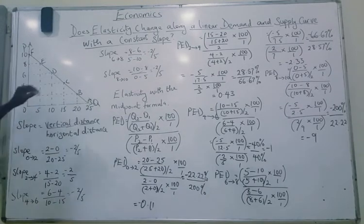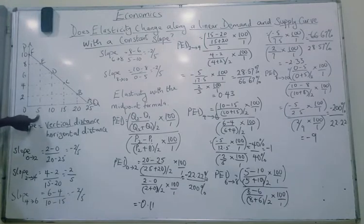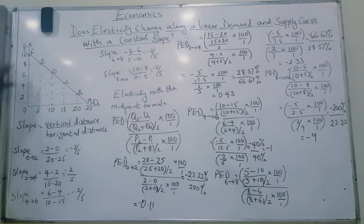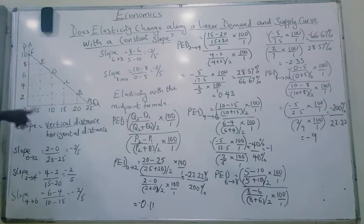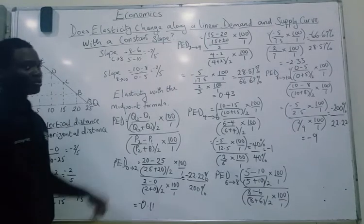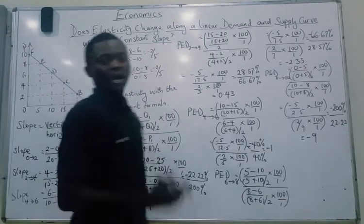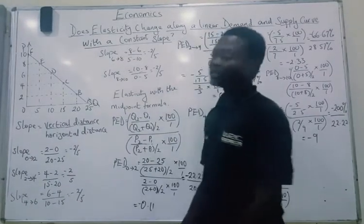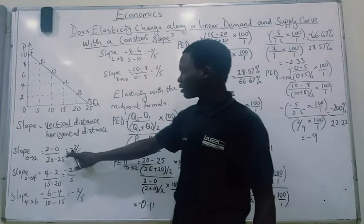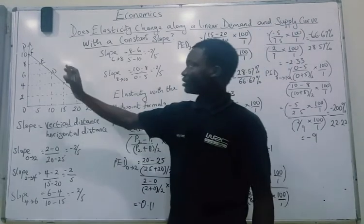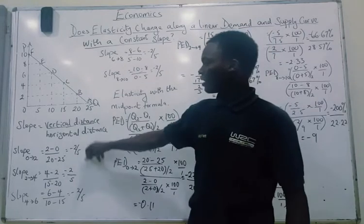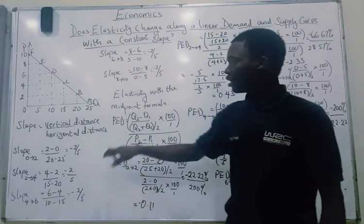Let's check the slope from price 8 to price 10. When the price was 8, quantity was 5. When the price became 10, quantity is 0 — nothing is demanded at this price. So we have 10 minus 8 divided by 0 minus 5, giving us minus 2 over 5 again. This tells us that along this downward sloping demand curve, the slope is the same throughout. The 2 over 5 magnitude is what we really need — the minus sign simply tells us there is a negative relationship between price and quantity.